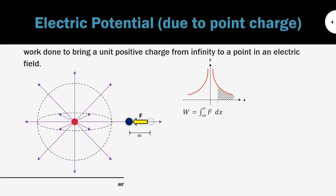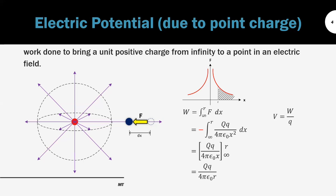So W is the integration of F with respect to x from infinity to r. The force applied on the point charge is equal in magnitude to the electrostatic force but in the opposite direction, which is why F in the integration is negative. Doing the integration, you get the work done equal to qQ divided by 4πεr. Substituting into the definition V = W/q, you get that electric potential V equals Q divided by 4πεr.